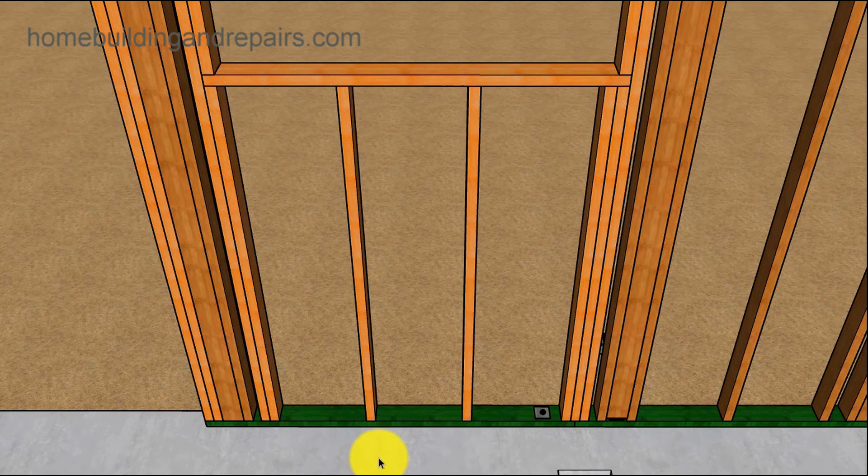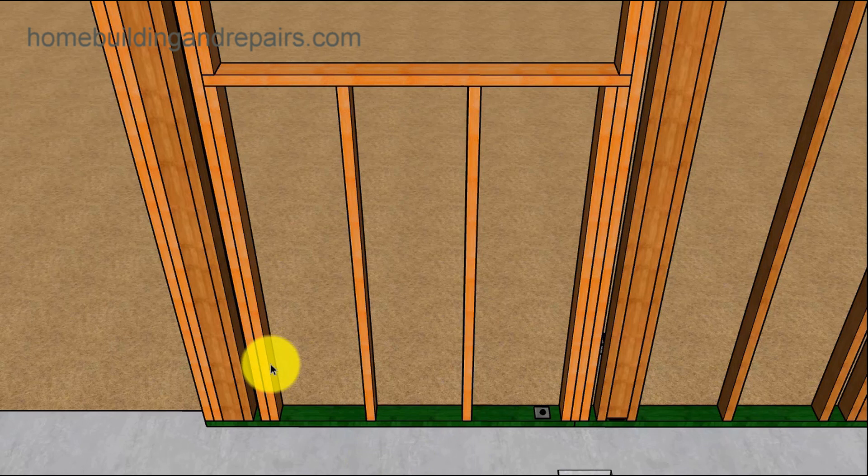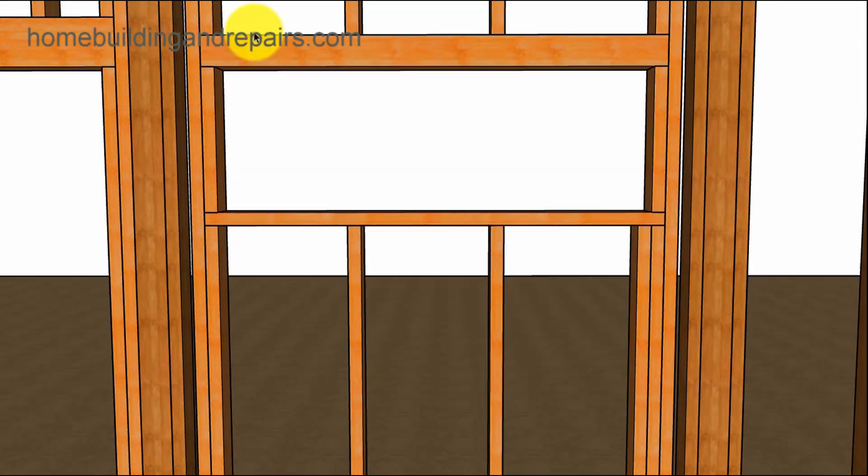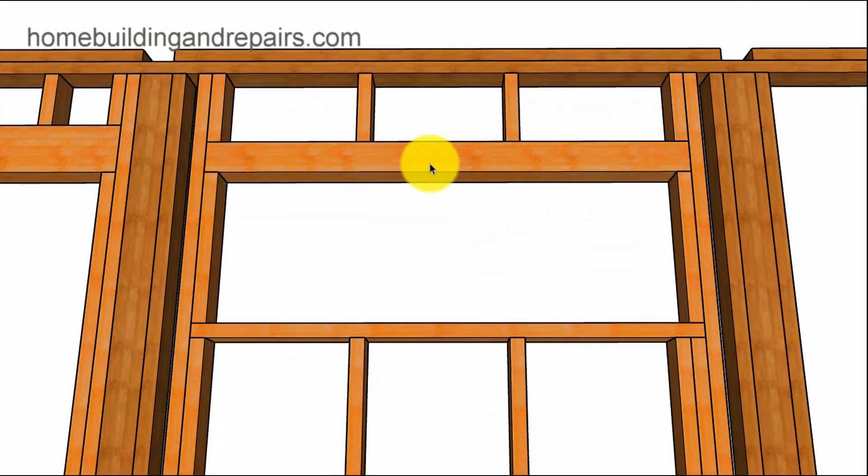The bathtub is going to be here. The bathtub window framing, give you an idea. Another backing stud here. This is where the walls are going to be intersecting. The interior walls are going to intersect with the exterior walls. A view of the header here.